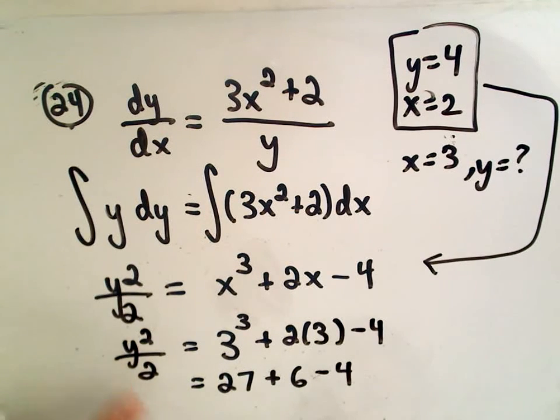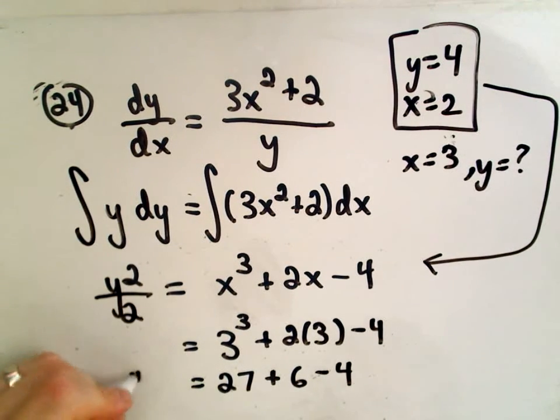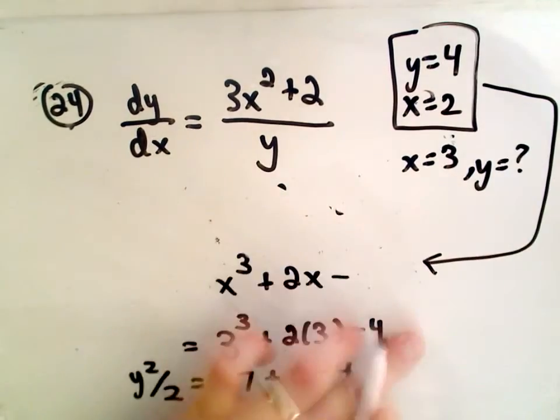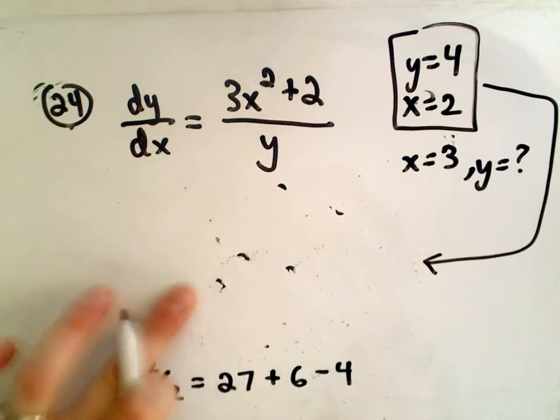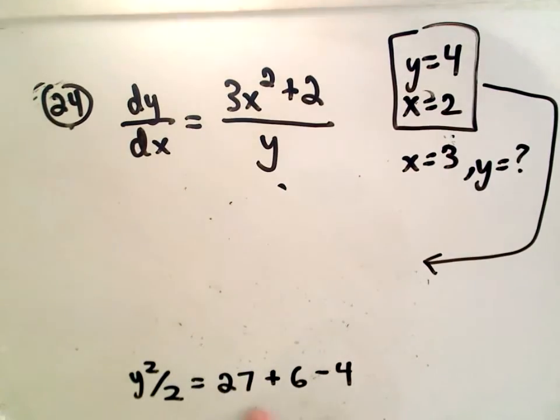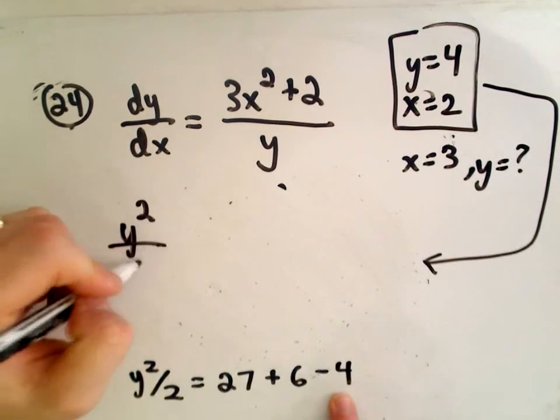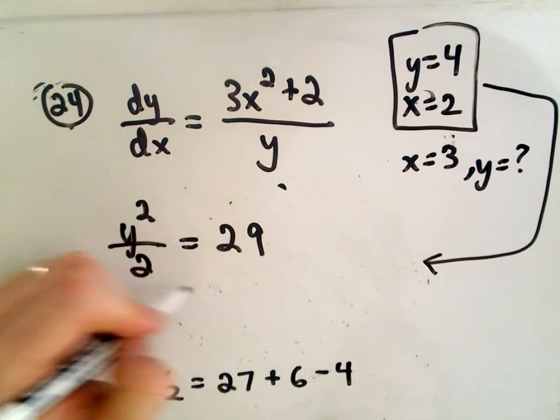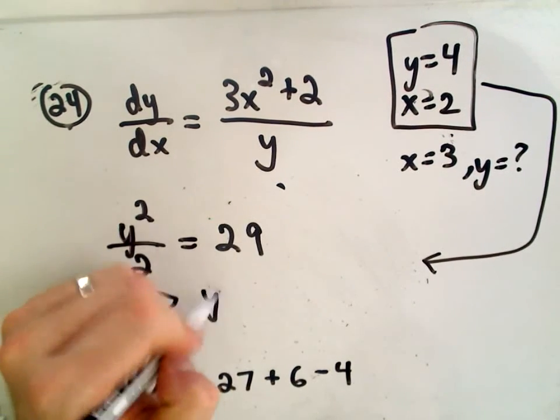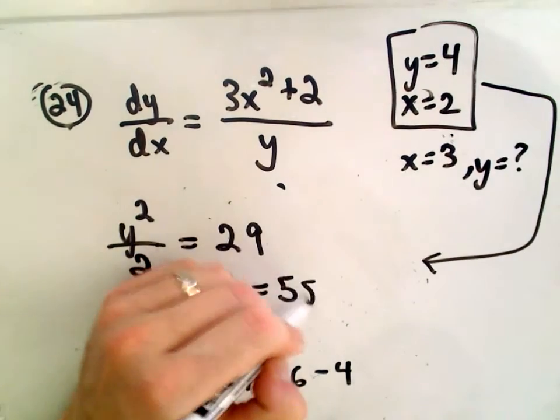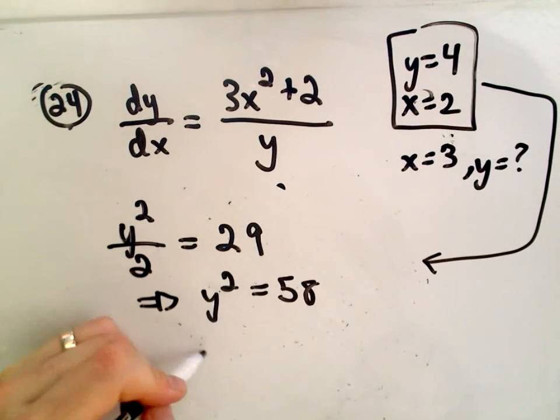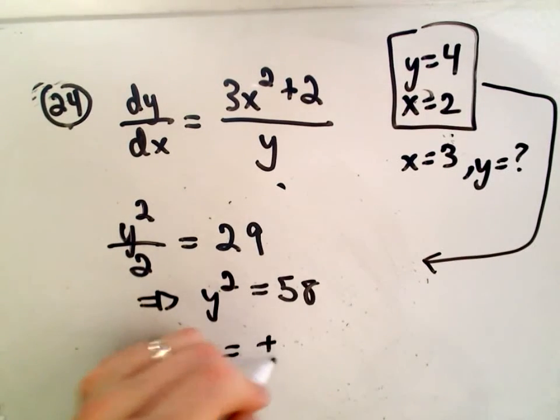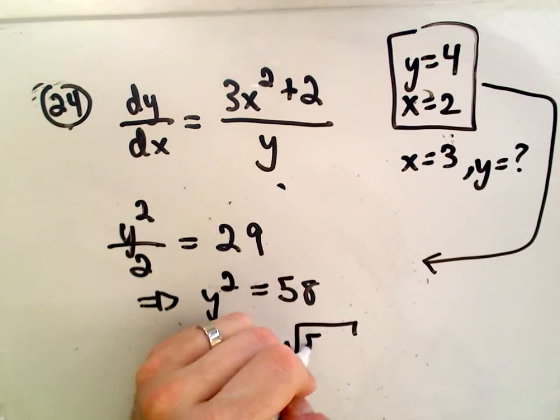We'll have y squared over 2 on the left. Okay, so I think we're almost there now. It's just a matter of simplifying down our arithmetic. So 27 and 6, that's 33. 33 minus 4 is going to be 29. If we multiply both sides by 2, we'll get that y squared equals 58.